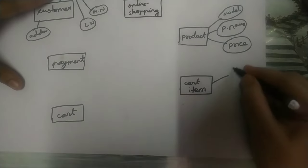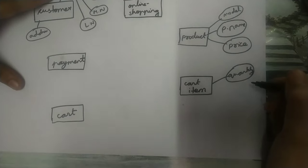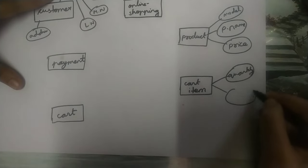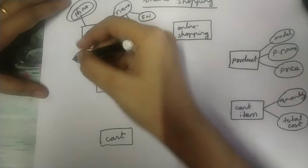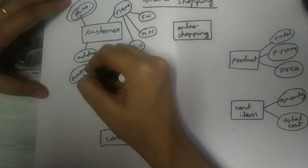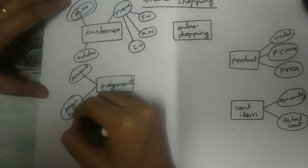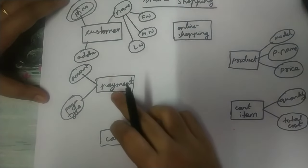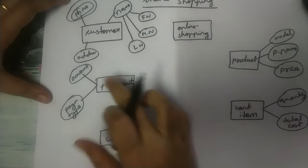Next, cart item. If the customer has selected two dresses, then the quantity will be two in the cart item. Next, for those two dresses, what is the total cost — that is also important in cart item. Next, payment. Under payment, the amount is an attribute. Then payment type is an attribute — whether you are going to pay through GPay or PhonePe or some other payment mode.